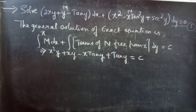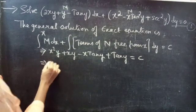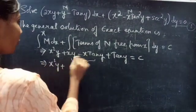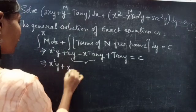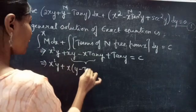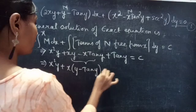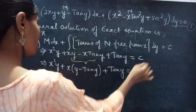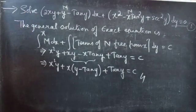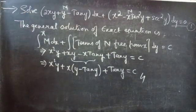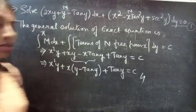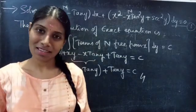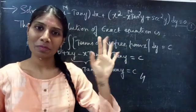The general solution of the exact equation is x²y + xy − x·tan y + tan y = c. We can factor x from the middle terms: x²y + x(y − tan y) + tan y = c, which is the required general solution. So we have seen a problem from exact equations in this video — hope you understand. We'll see you in the next video, until then bye bye.